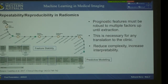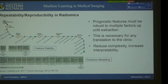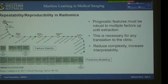That leads to the issue of repeatability and reproducibility in radiomics. Prognostic features must be robust to multiple factors up until the extraction point if we want them translated into a clinical setting, and for predictive modelling we want to reduce complexity and increase interpretability. The radiomics quality score is an evaluation criteria and guideline for researchers to create reproducible radiomics studies, requiring researchers to report features robust to imaging and multiple time points, to do feature selection to reduce overfitting, and to use some form of validation such as cross-validation, bootstrapping, or an independent test set.